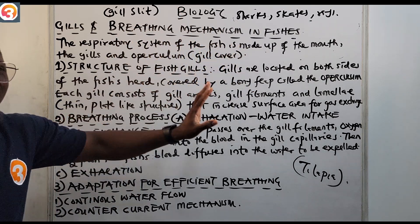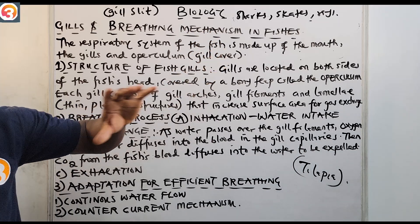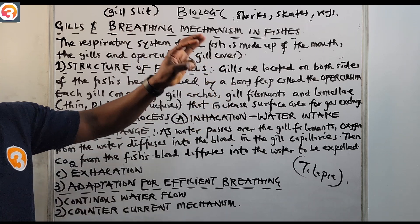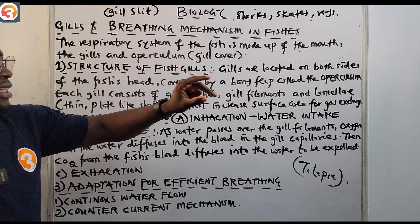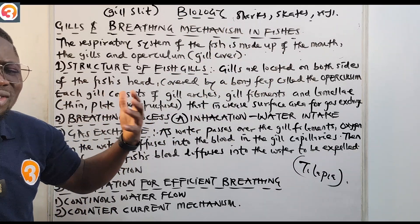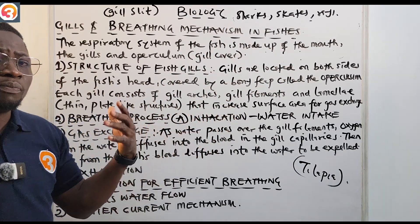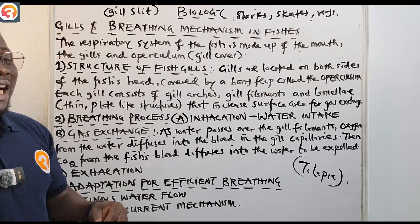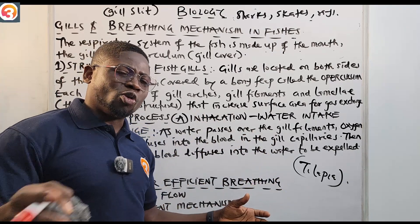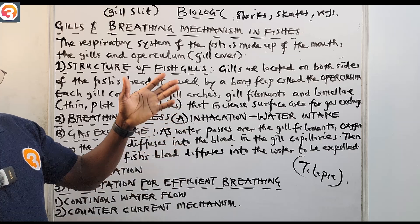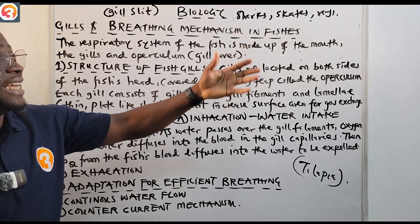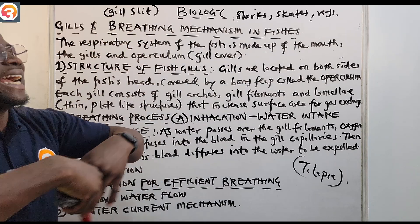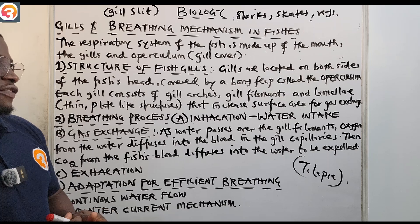To summarize the gills: they are the respiratory surfaces for fishes and tadpoles, made up of three major parts — the filaments, the arches, and the rakers. The filaments are for gaseous exchange; the arches provide structural support; and the rakers trap food particles from entering the gills. Bony fishes like tilapia have an operculum covering the gills, while cartilaginous fishes like sharks, skates, and rays have gill slits that open directly to the outside.